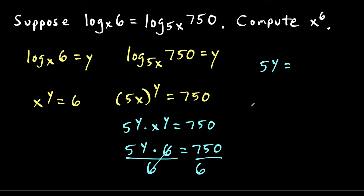We have 5 to the y power equals 750 over 6, which works out to 125. Now this part we can do in our head: 5 to what power equals 125? Since 5 to the third power equals 125, we can say that y equals 3.